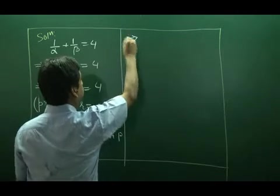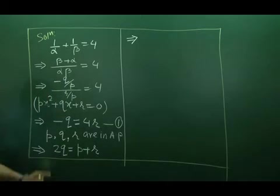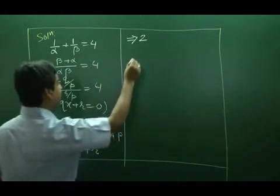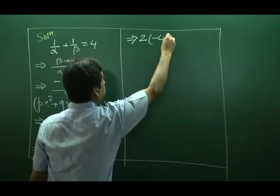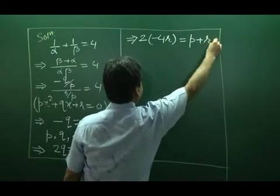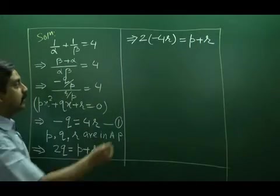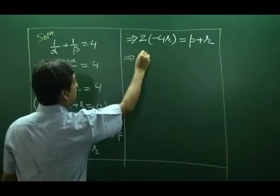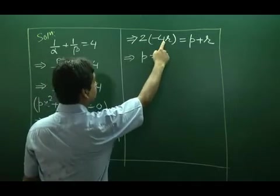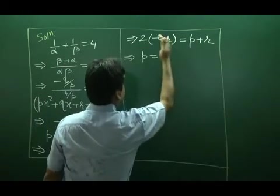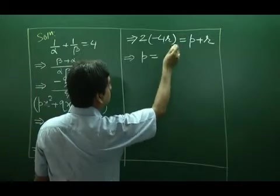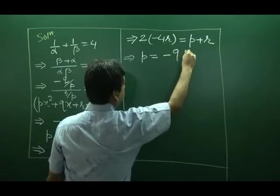Then, the relation is 2 multiplied by minus 4R is equal to P plus R. So, P is equal to minus 8R, and when R crosses this side, it will be again minus R. So, P is minus 9R.